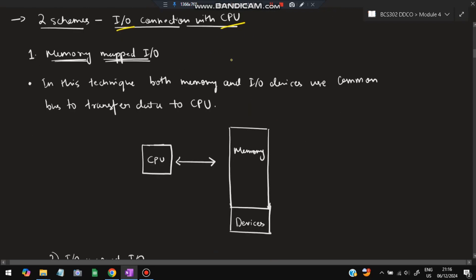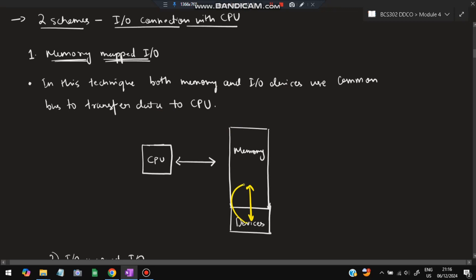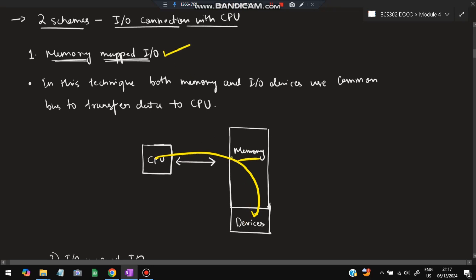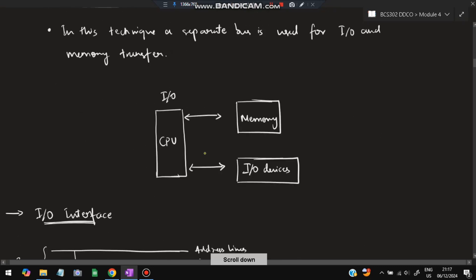There are two ways I/O devices are connected to the CPU. First is memory-mapped I/O: in this technique, both memory and I/O devices use a common bus to transfer data to the CPU. The devices can access the memory, and data passes through memory to/from the CPU. Second is I/O-mapped I/O: here we have a separate bus for the memory and a separate bus for the I/O devices.